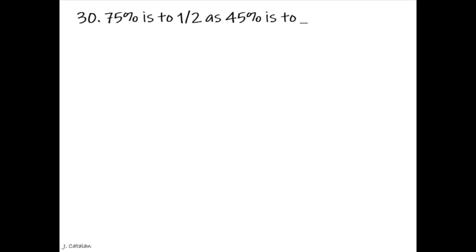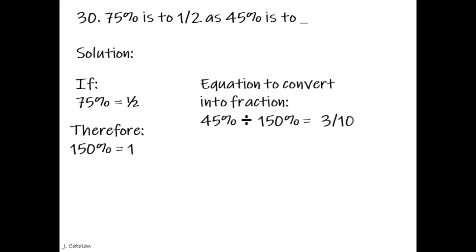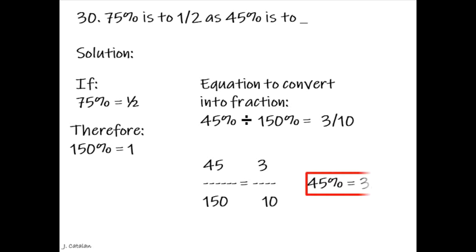75% is to one half as 45% is to underscore. Solution. If 75% equals one half, therefore 150% equals one. Equation to convert into fraction: 45% divided by 150% equals three tenths. Finding a divisor: 15 divides both 45 and 150. 45 divided by 15 is 3, and 150 divided by 15 is 10. The fraction of 45% is three tenths.